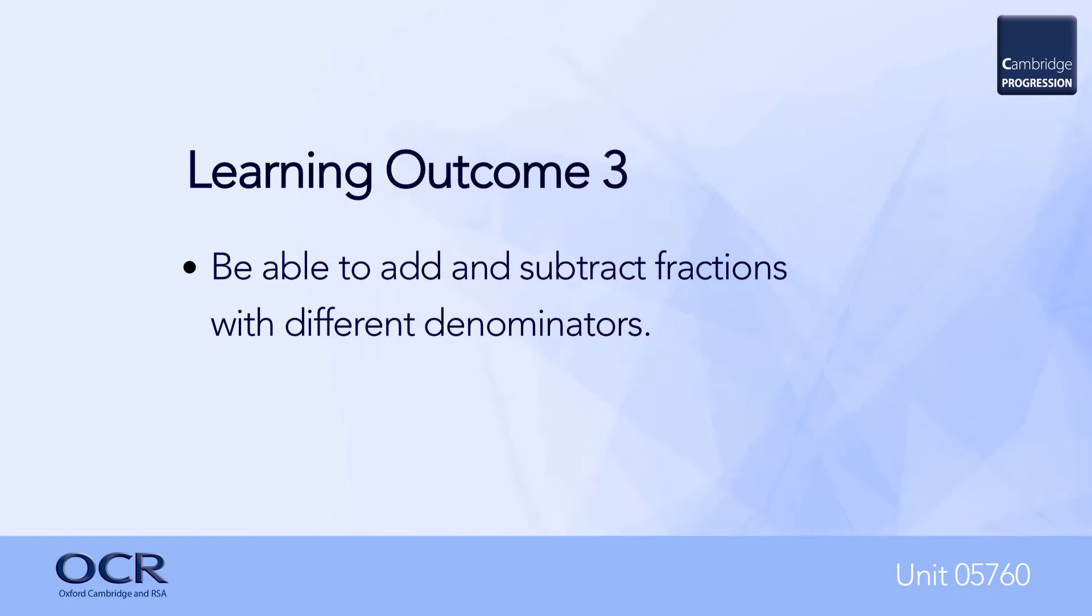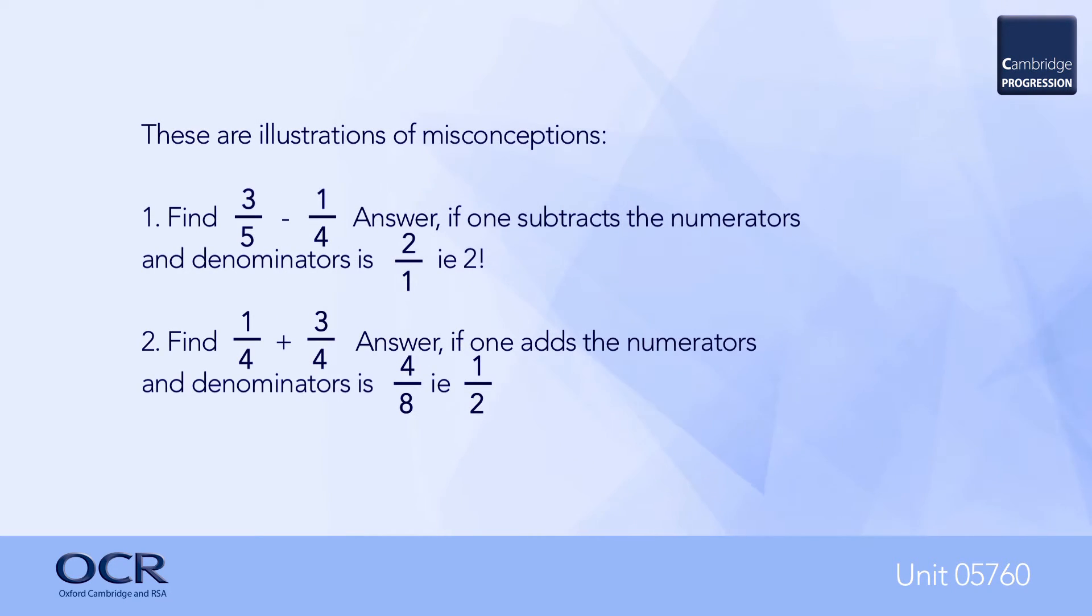For learning outcome number three, learners must be able to add and subtract fractions with different denominators. This builds on the knowledge used in the previous outcome, changing fractions into equivalent fractions in order to add or subtract them. Clearly one cannot add or subtract, for example, three-fifths and one-quarter, without changing both fractions into fractions with the same denominators.